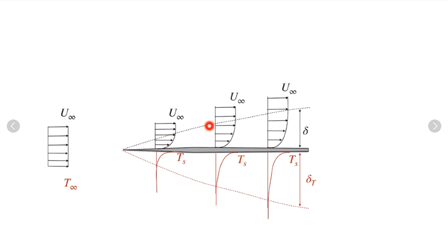The boundary layer grows with position in our flow direction, and we also have a thermal boundary layer where we're talking about the transition from the surface temperature out to the free stream temperature with a different thermal boundary layer size compared to the momentum boundary layer.